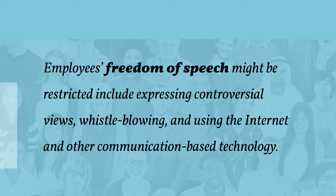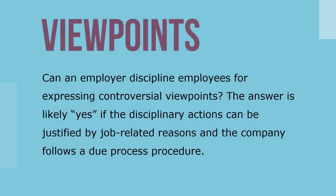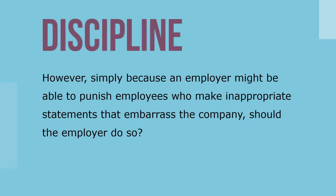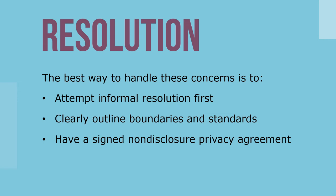Three situations in which employees' freedom of speech might be restricted include expressing controversial views, whistleblowing, and using the Internet and other communication-based technology. Questions of free speech can arise over the right of employees to advocate controversial viewpoints at work. An employee can be disciplined if the action is justified by job-related reasons and the company follows due process procedures. However, employers should consider that employees may view heavy-handed responses as overreaction. The best approach is to attempt informal resolution first, clearly outline boundaries in a formalized policy, and have an assigned non-disclosure privacy agreement.